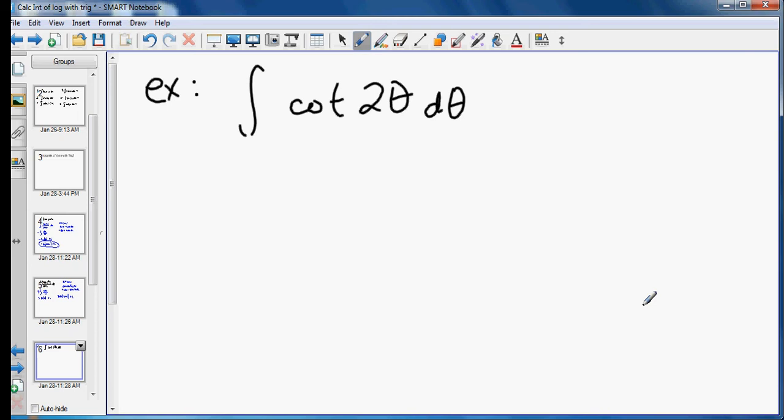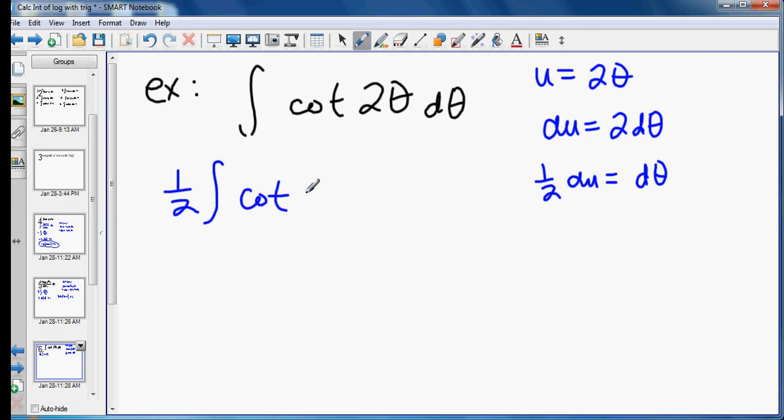So instead what I'll use for u is 2 theta. And the derivative of that is 2 d theta. Divide both sides by 2. We have 1 half du equals d theta. When we substitute that, we'll have 1 half cotangent of u du.